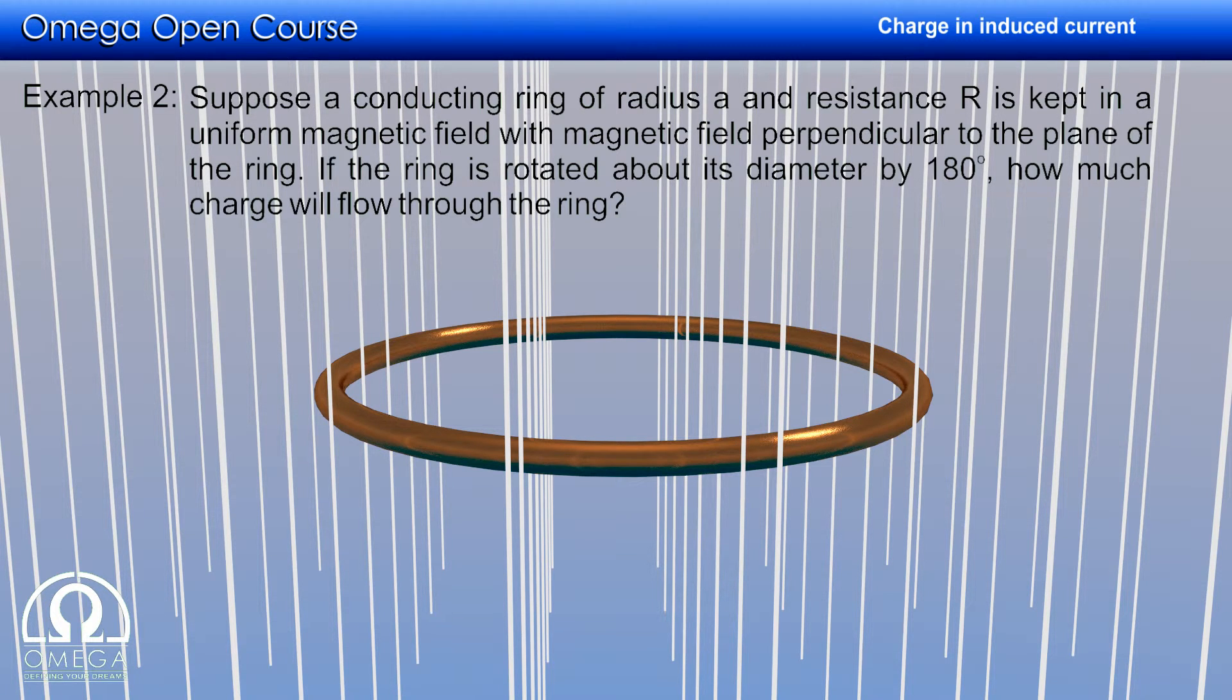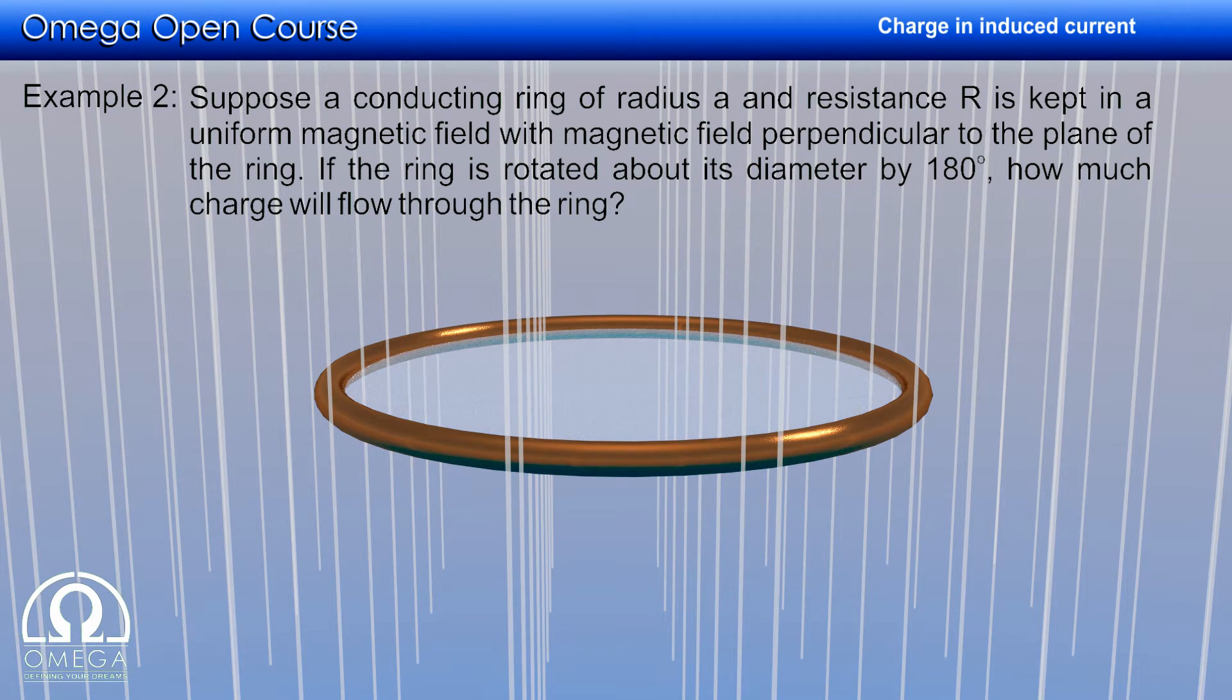Suppose a conducting ring of radius A and resistance R is kept in a uniform magnetic field with magnetic field perpendicular to the plane of the ring. If the ring is rotated about its diameter by 180 degrees, how much charge will flow through the ring?